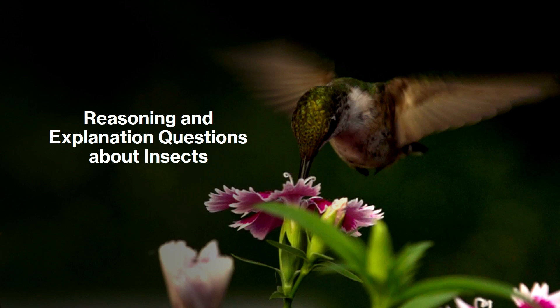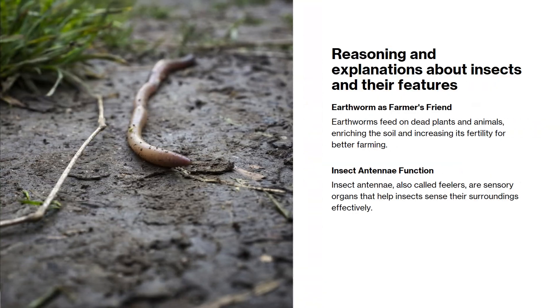Let's tackle some reasoning and explanation questions about insects and their features, focusing on their roles in nature and unique adaptations. Earthworms are called the farmer's friend because they feed on dead plants and animals, enriching the soil and increasing fertility. Insect antennae are also called feelers and serve as sensory organs to help insects sense their surroundings.